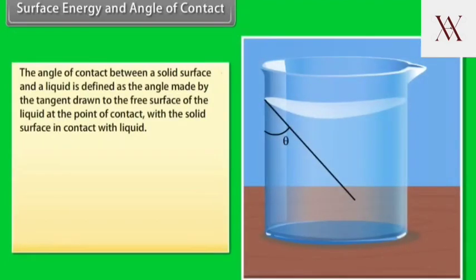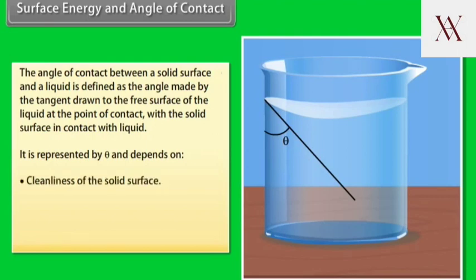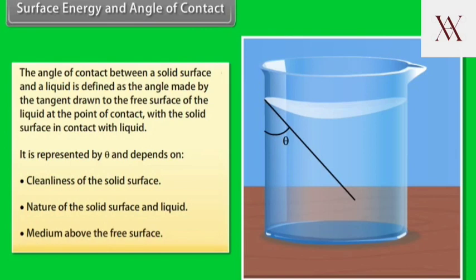The angle of contact between a solid surface and a liquid is defined as the angle made by the tangent drawn to the free surface of the liquid at the point of contact with the solid surface in contact with liquid. It is represented by theta and depends on cleanliness of the solid surface, nature of the solid surface and liquid, and medium above the free surface.